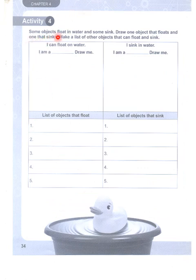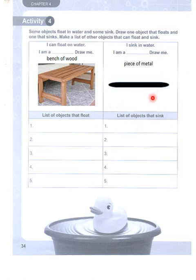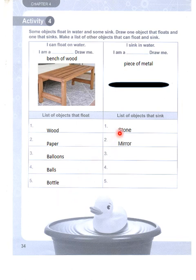Activity four: some objects float in water and some sink. Draw one object that floats and one that sinks. A bench of wood floats in water — I have drawn a bench. A piece of metal sinks in water. I have also listed: wood, paper, balloons, balls, and bottles float; stone, mirror, eraser, iron, and coin sink.